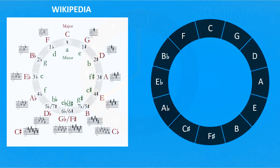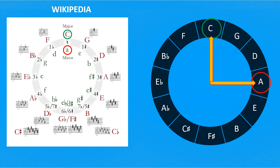Now let's return to our question: how can we get the relationship between a major and its relative minor scale, as we do in the Wikipedia version? The question can be reformulated as follows: starting from C as the major scale, how many minutes do we have to move to get the relative A minor scale? The answer is that we have to move clockwise by a quarter of an hour. And this works not just for C major and A minor, but for all the scales.